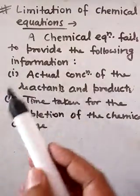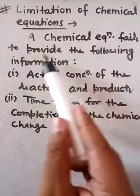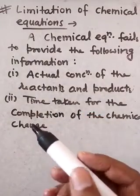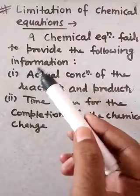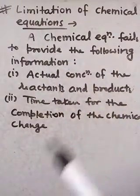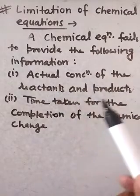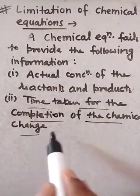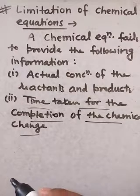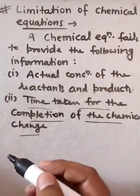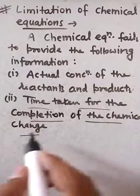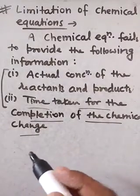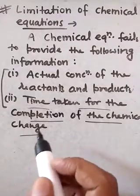Here we see the limitations of chemical equations. A chemical equation fails to provide the following information. On one hand, chemical equations provide us so much information, but on the other hand, a chemical equation fails to provide: the actual concentration of the reactants and products, and the time taken for the completion of the chemical change. These are two major points that are not explained by a chemical equation.